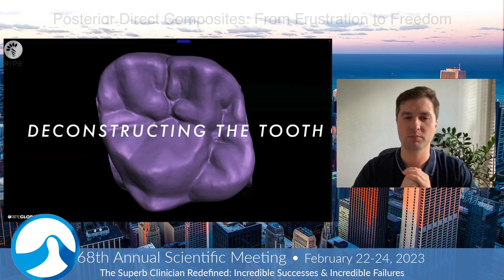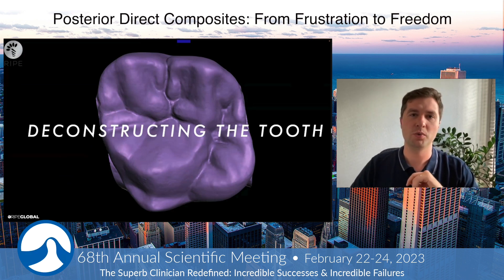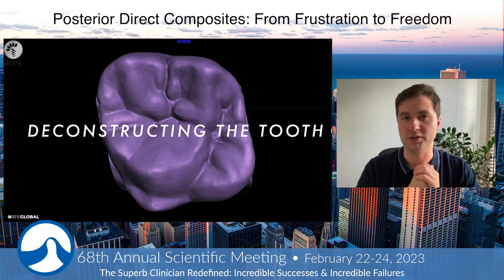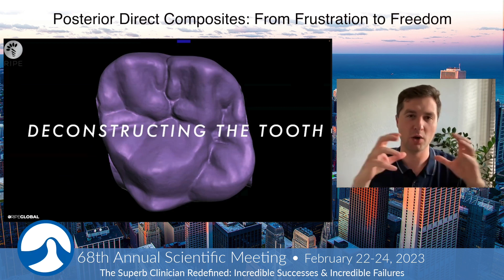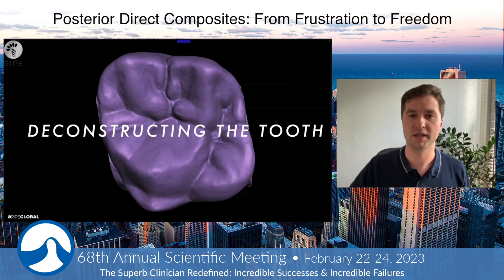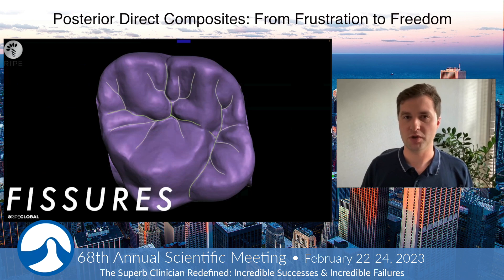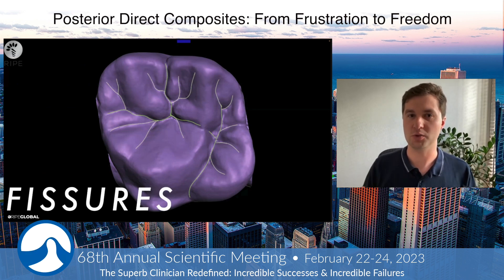One of the problems with direct posterior composites is actually understanding the occlusal anatomy or occlusal morphology well enough. When we look at the occlusal morphology of the upper molar, the problem is that it's so complex — no matter how we look at it. As in usual textbooks or how we're taught in universities, it just looks so complex all the time. We can look at the fissures and the different fissure patterns and try to memorize them and try to understand how they work and how they connect.